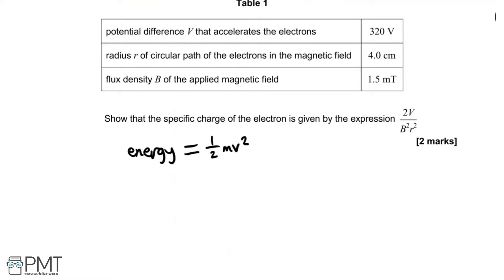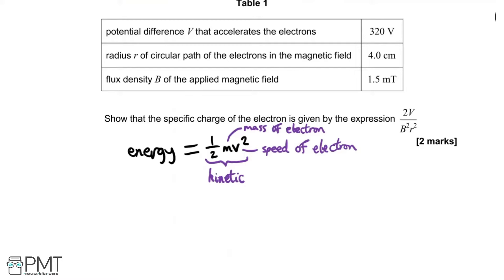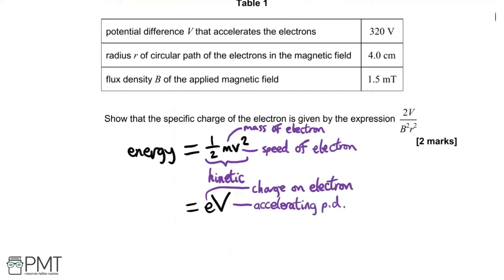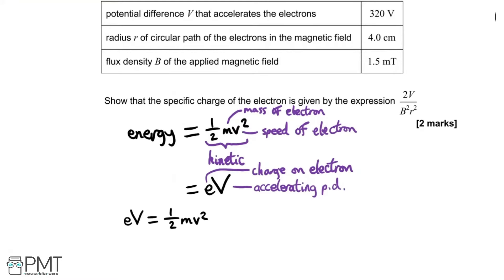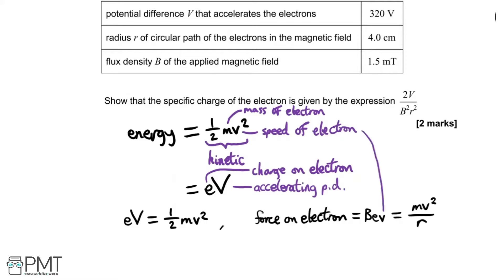The first equation is that kinetic energy equals one-half mv squared. We can also make this equal to the electrical energy given to the electron, which is eV — where this is a capital V representing the potential difference that accelerates the electrons. Equating those two terms together, we can also write down the equation that relates the magnetic force to the centripetal force on the electron. Lowercase v is the speed of the electron, lowercase e is the charge on the electron, so Bev is the magnetic force, and mv squared over r is the centripetal force, where r is the radius.